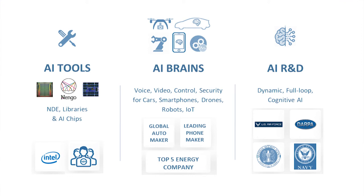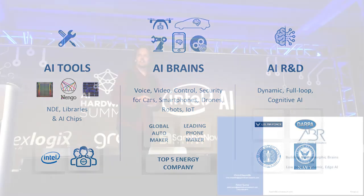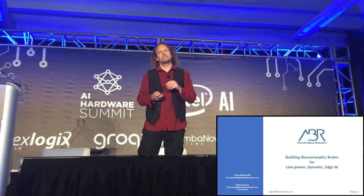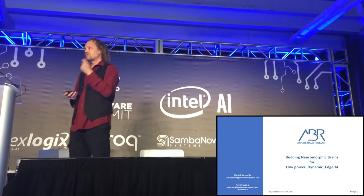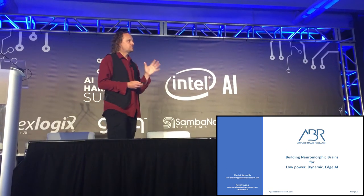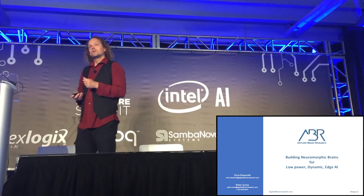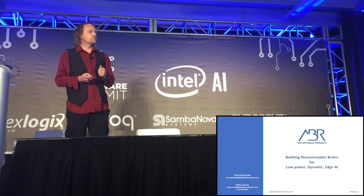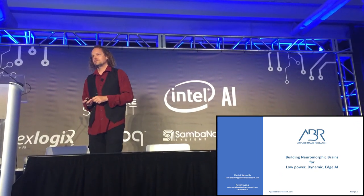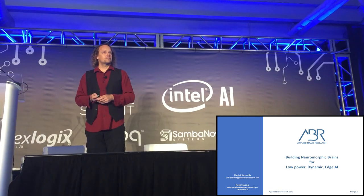We also do a lot of advanced R&D — we've developed a recurrent network that meets LSTMs and GRUs on recurrent processing and works really well with spikes, and we've done things like scene understanding rather than just image classification. In conclusion, if you have the kind of problem where dynamics, low power, and edge AI solutions are of interest, definitely come talk to me or Peter. We're also doing a Series A $50 million raise right now and are in diligence, so if that is of interest, come talk to us. Thank you very much.